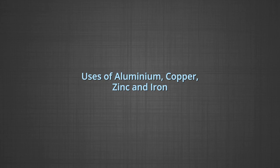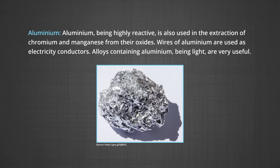Now, let us understand the uses of these pure metals that we have formed. Aluminum, copper, zinc and iron. First of all, aluminum as we know is used in aluminum foils, used as wrappers for chocolates. The fine dust of the metal is used in paints and lacquers. Aluminum being highly reactive is also used in the extraction of chromium and magnesium from their oxides. Wires of aluminum are used as electricity conductors. Alloys containing aluminum being light are very useful.